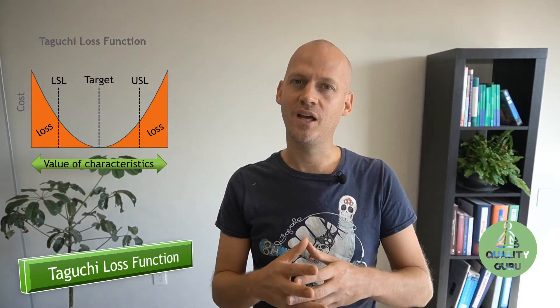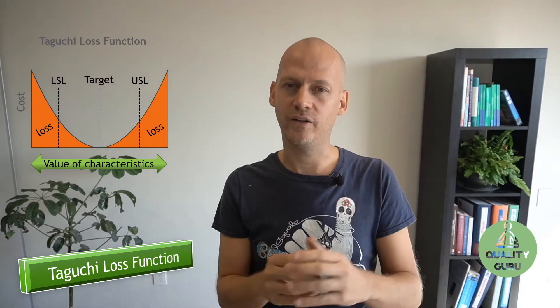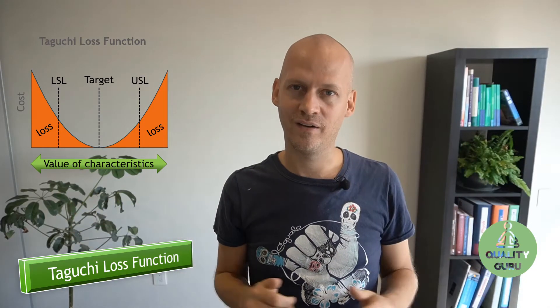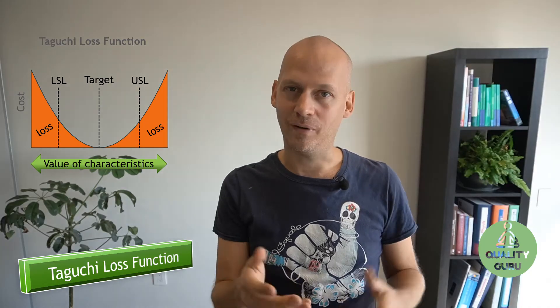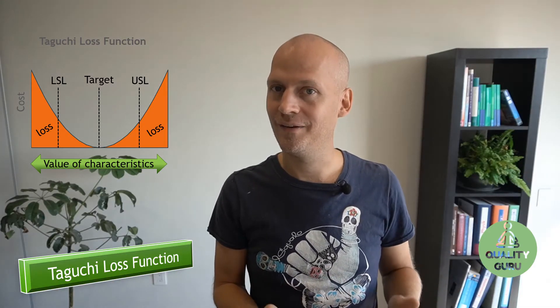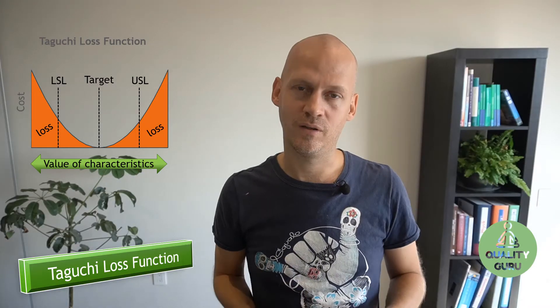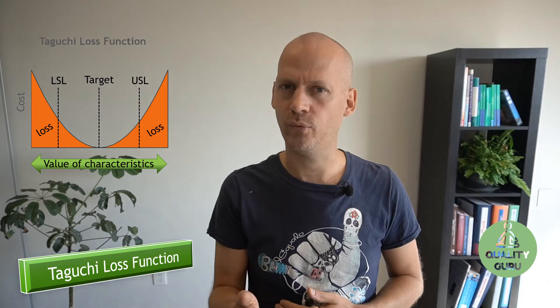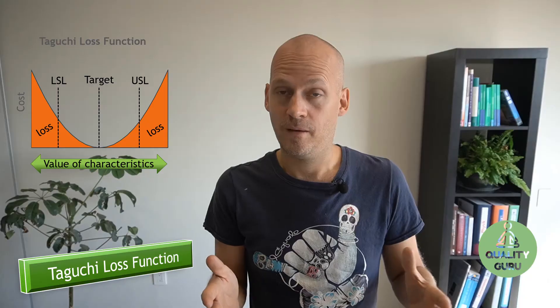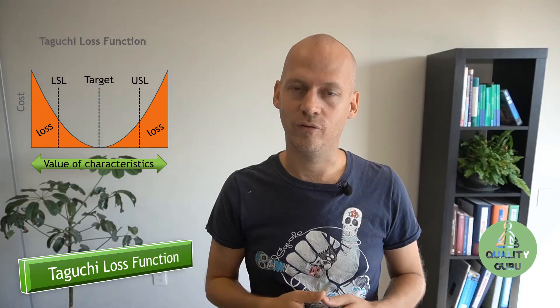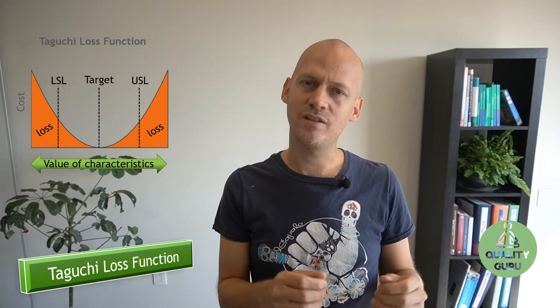In the loss function from Taguchi, he was thinking in a different way — a little bit bigger, seeing the big picture. He said: here's a product with a target value, and every time I deviate from the target value, I create losses, and the losses add up the more I go away from my target. When it's outside specification, I cannot sell the product anymore — it's a non-conforming product. I have to take it out, throw it away, or rework it with extra effort to make it conforming.